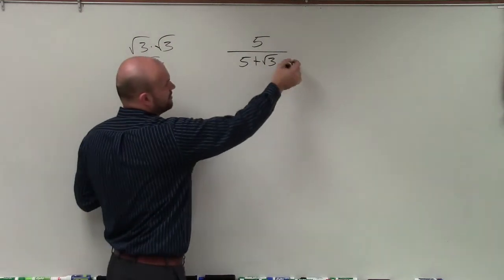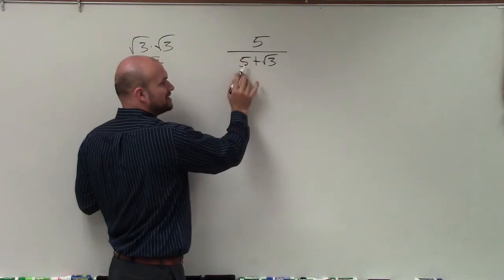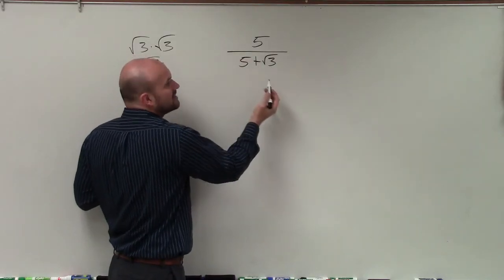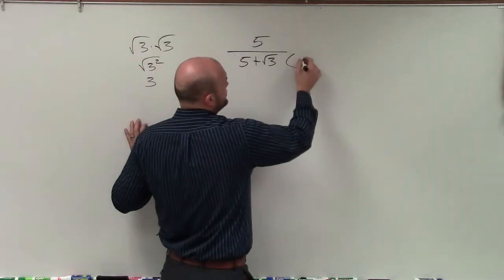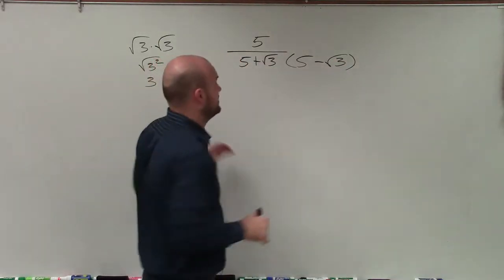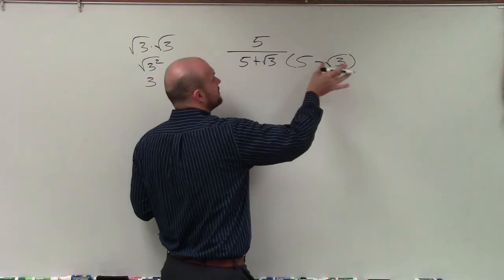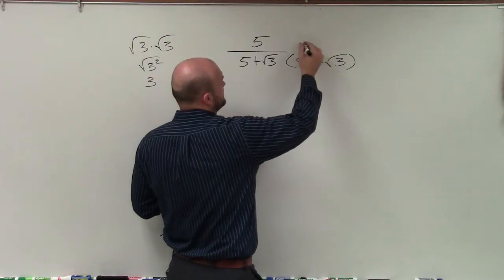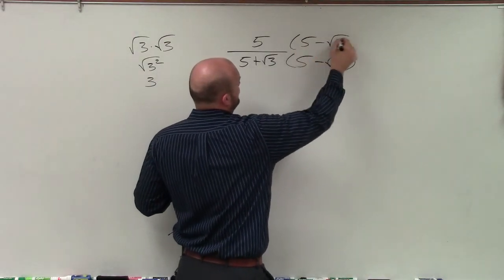But the problem is, if I just multiply by √3 on the top and bottom, I have to apply the distributive property on the bottom. So I'm always going to have a square root of 3. Therefore, we choose the conjugate, which is 5 - √3. And I multiply 5 - √3 on the top, and I multiply that on the bottom.